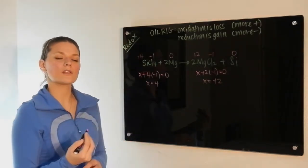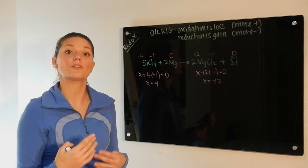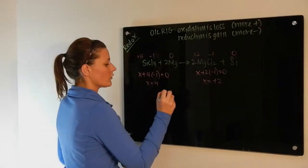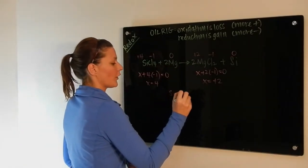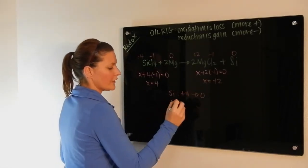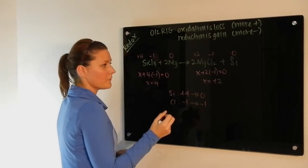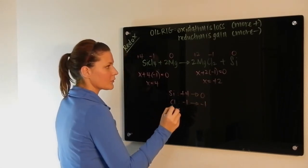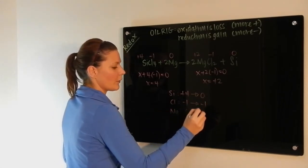Now what we want to do is look at the elements and see how their oxidation number changed. So silicon started at a plus four and it went to zero. Chlorine started at negative one and it went to negative one. And lastly, magnesium started at zero and it went to plus two.